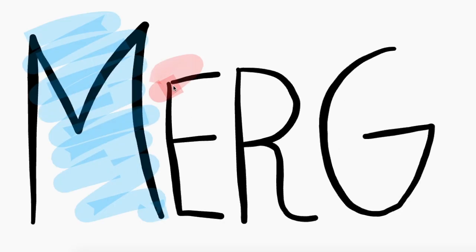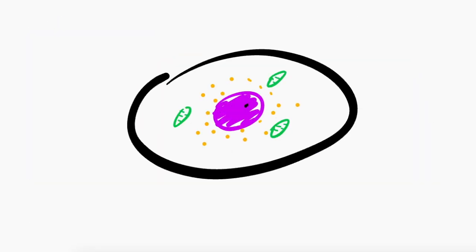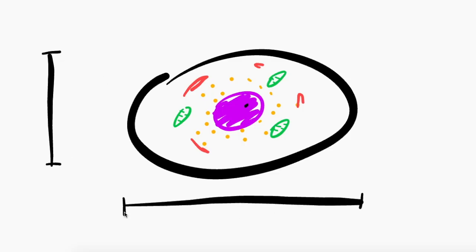This is the MERG project. Let's talk about the size of the cell. The main reason why it's so small is because it needs to be efficient.